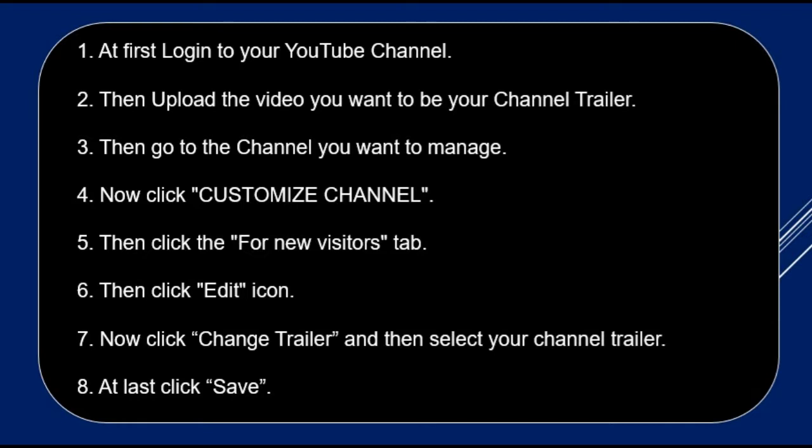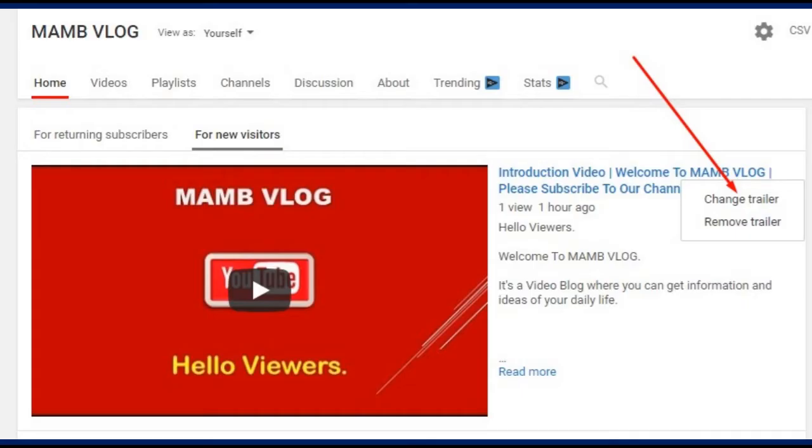Now click Customize Channel. Then click the For New Visitors tab. Then click the Edit icon. Now click Change Trailer and then select your channel trailer. At last, click Save.